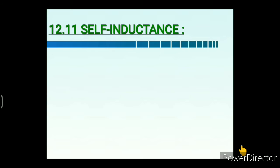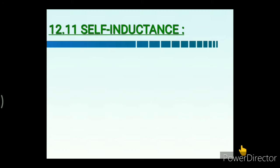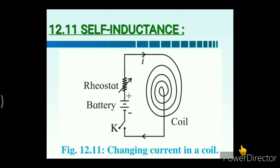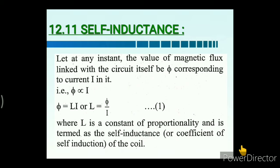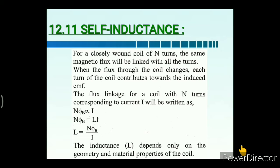Self-inductance is the production of induced EMF in the circuit or coil itself on account of a change in the current in it. Magnetic flux is directly proportional to current, so φ = LI, where L is the constant of proportionality called self-inductance. For a closely wound coil of N turns, the flux linkage N·φ is directly proportional to I, giving N·φ = LI.